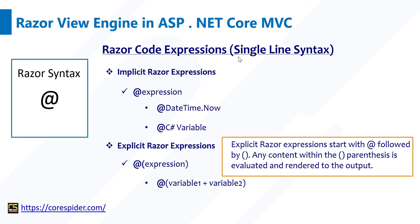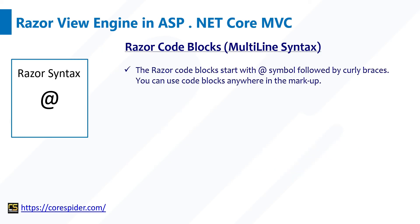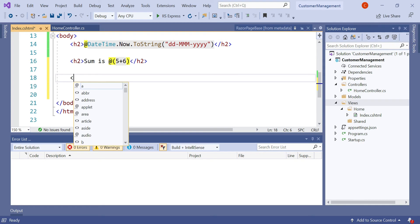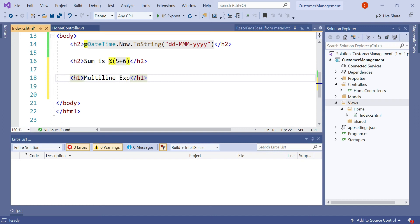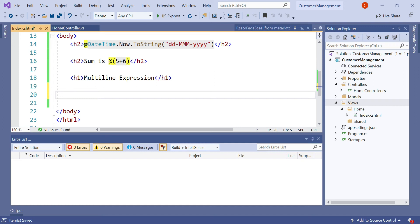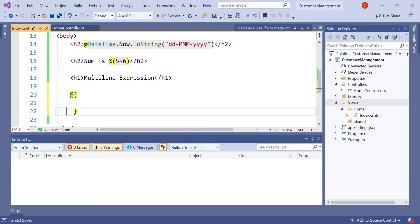We have covered the Razor Code Expression or single-line syntax. Now let's discuss multi-line syntax. Razor Code Blocks start with the @ symbol followed by curly braces — that is called multi-line syntax. The syntax is: @ then curly braces, then your logic. You can use code blocks anywhere in the Razor View page. Let's understand how to write the Razor Code Block in the .cshtml page.